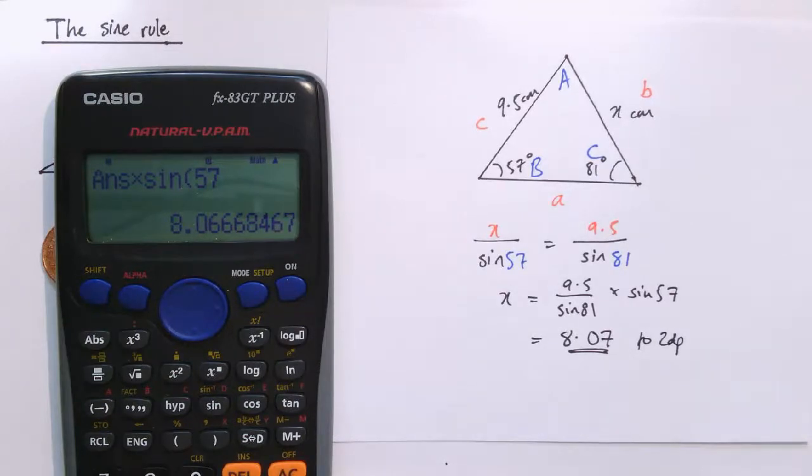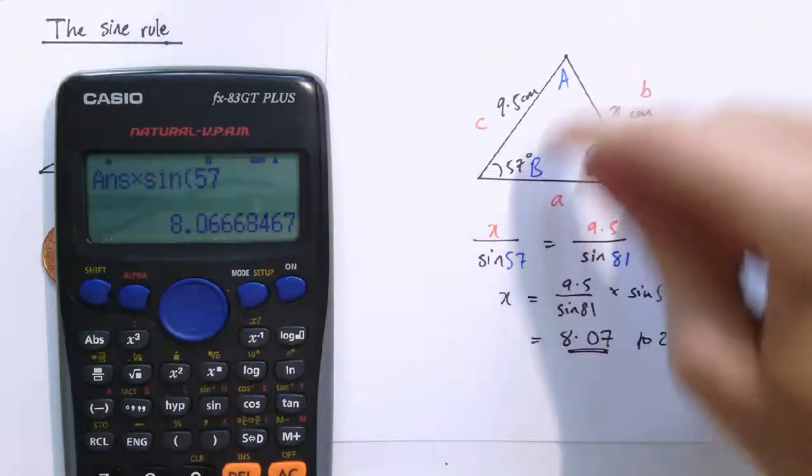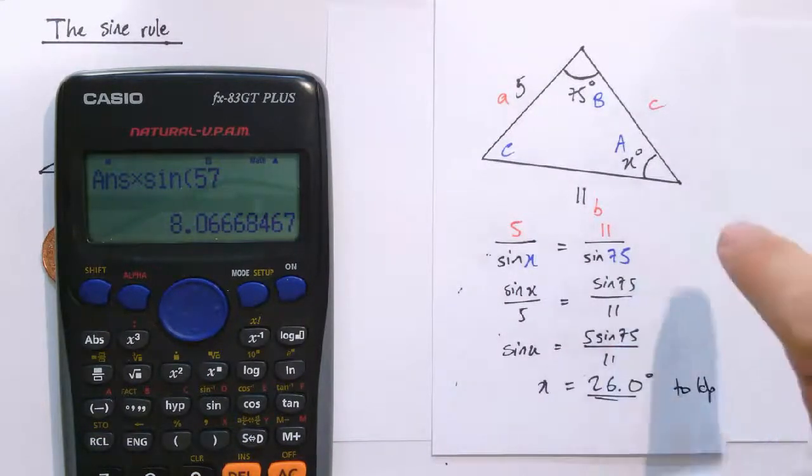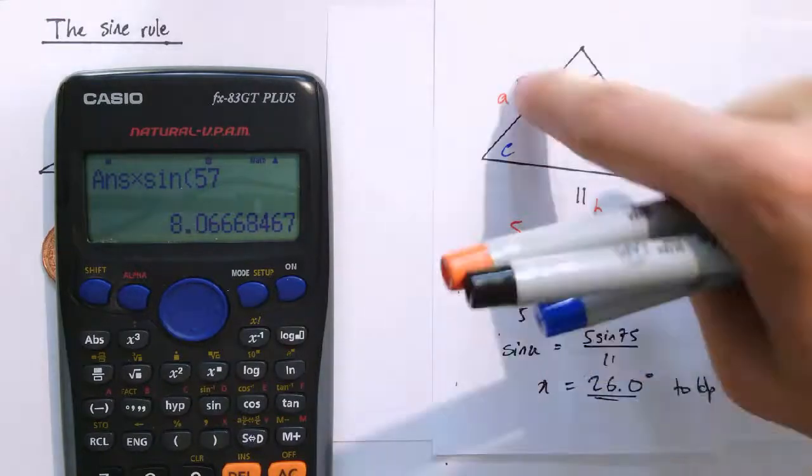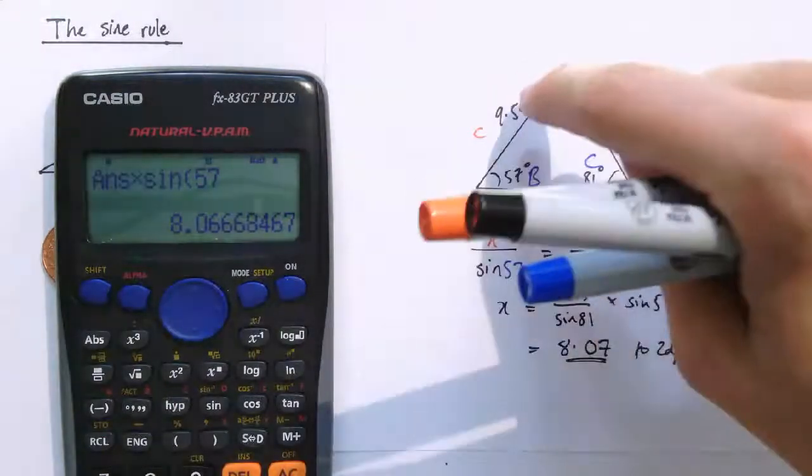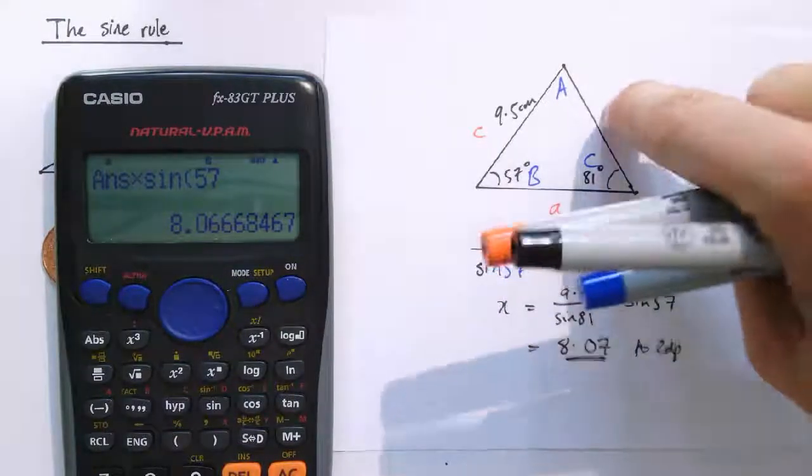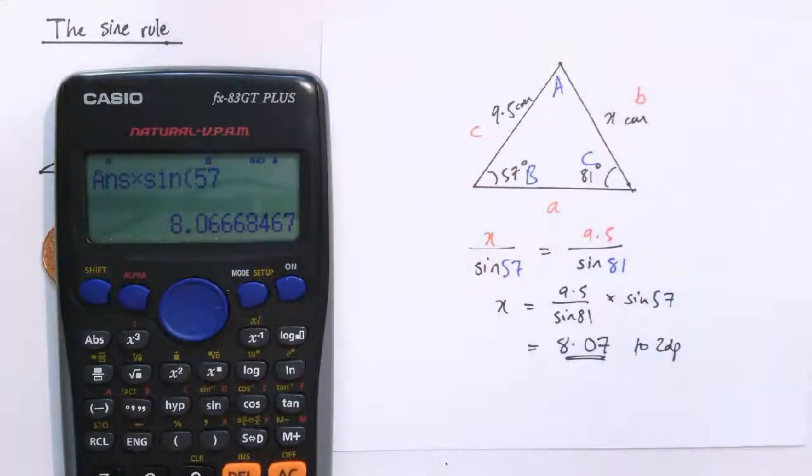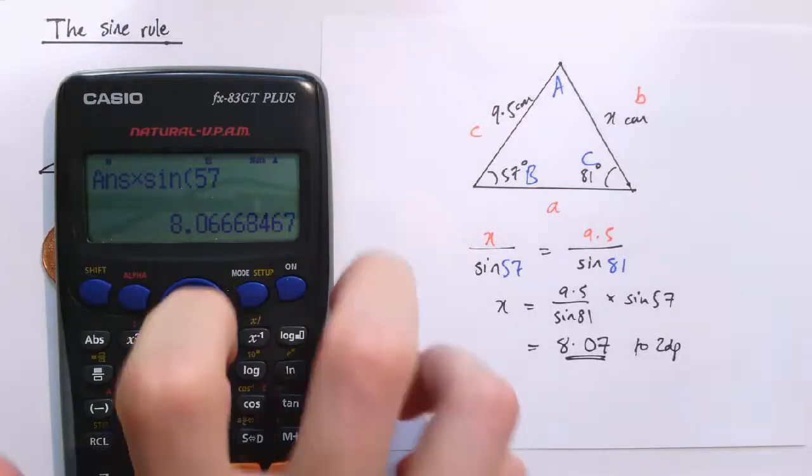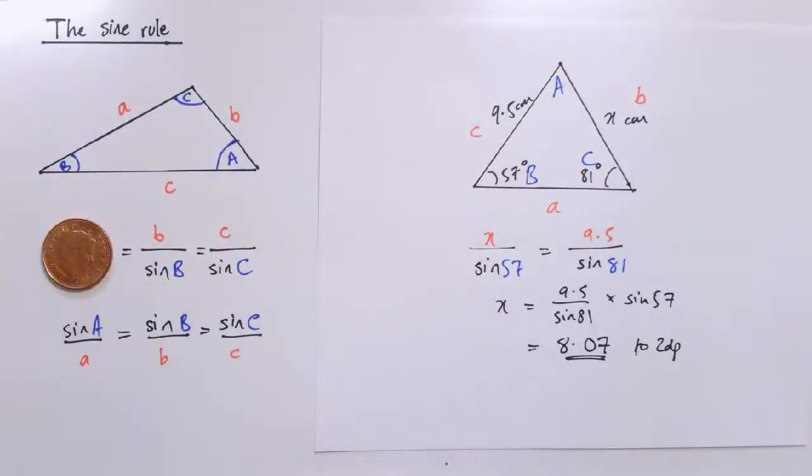So there's two examples of where the sine rule has been useful, essentially where we've had two pairs of opposite side and angles. In the first case we were missing an angle out of those four bits of information, and here we had one, two, three, four bits of information, and we were missing one out of them. It doesn't matter about the other pair, we're not using that, we're only using the sine rule, two parts out of three at a time, like this.